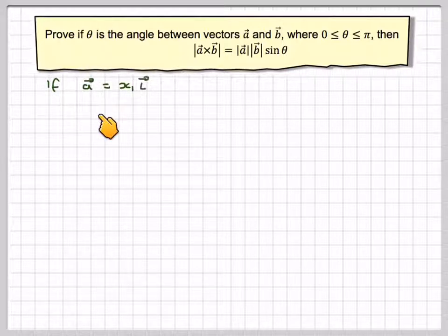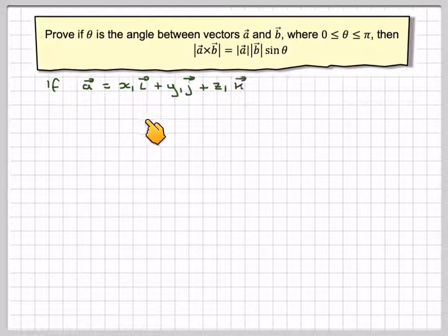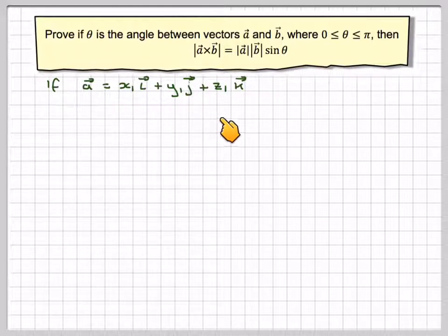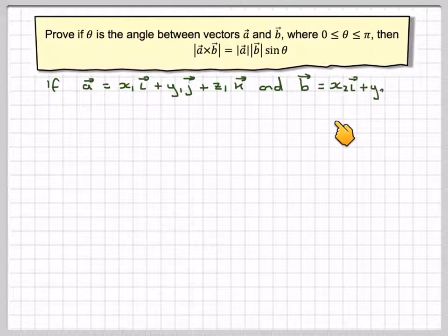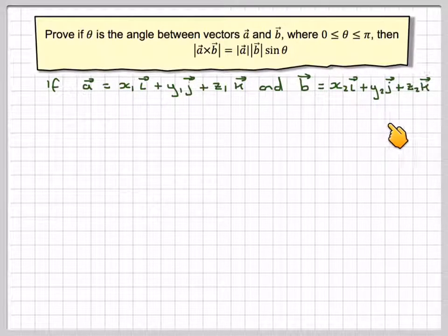So if we let vector A be x1i plus y1j plus z1k, and vector B be x2i plus y2j plus z2k.